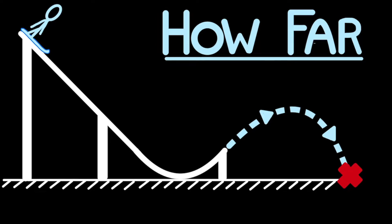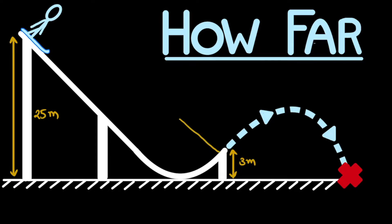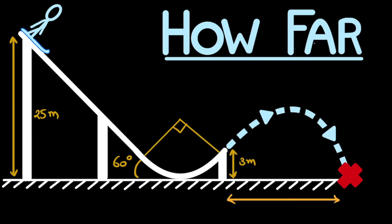First, some numbers about the system we're working with. The ski jumper starts out at a height of 25 meters and leaves the ramp at a height of 3 meters. The angle of the ramp once it starts curving is 60 degrees, which is also the angle with which the ski jumper leaves the ramp and gets catapulted into the air. Given only these three pieces of information, we are asked to calculate the distance from the ramp at which the ski jumper will hit the ground.